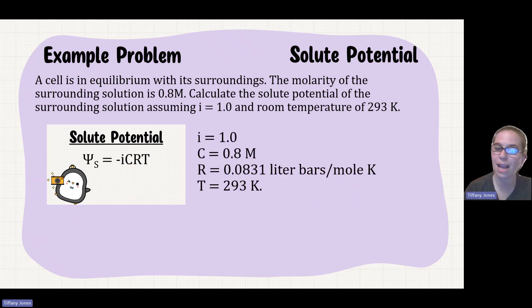So first take inventory. i is equal to 1 is given in the prompt. C is 0.8, that was also given in the prompt. R is a known value of 0.0831 liter bars per mole Kelvin, and my temperature is 293 given in the prompt. Sub all those into the equation.